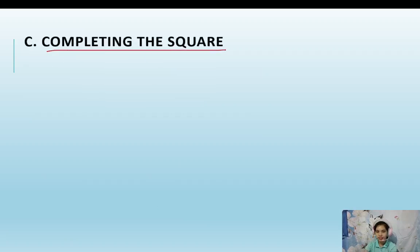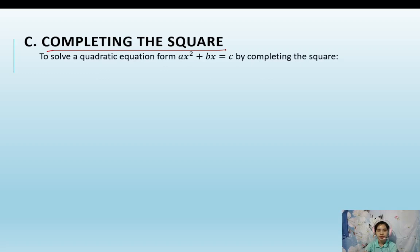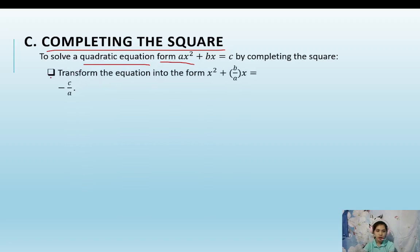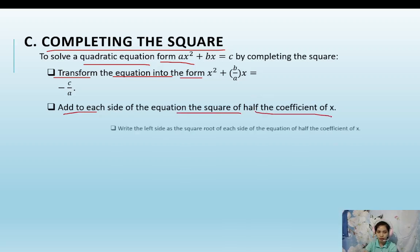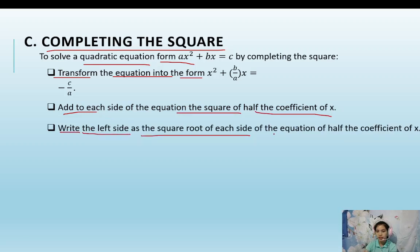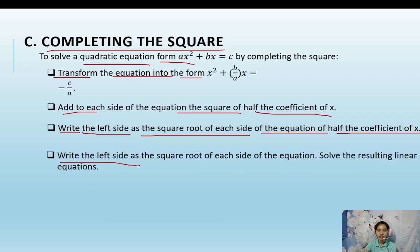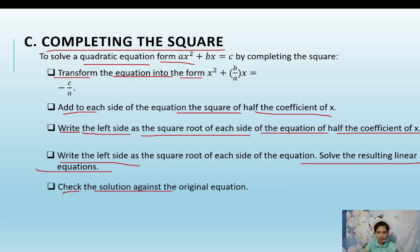Now let's talk about completing the square. Among the four methods, this is one of the most complicated, so please listen carefully. To solve a quadratic equation of the form ax squared plus bx equals c by completing the square: transform the equation into the form x squared plus b over a times x equals negative c over a; add to each side the square of half the coefficient of x; write the left side as a squared binomial; then solve the resulting linear equation and check the solution.